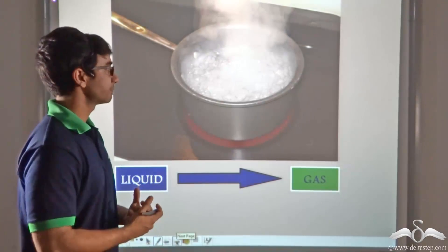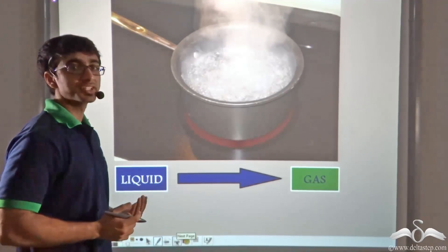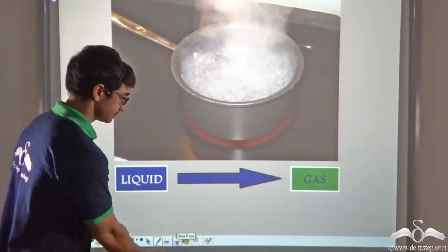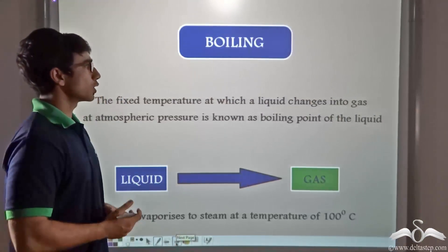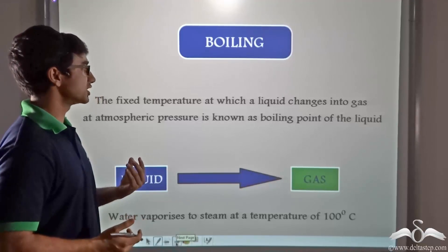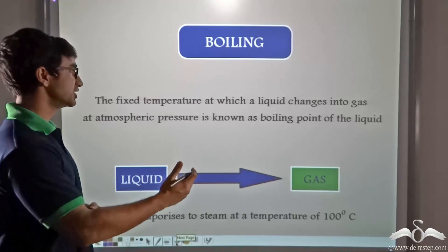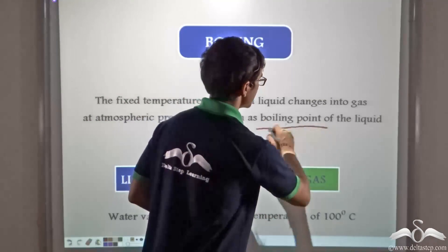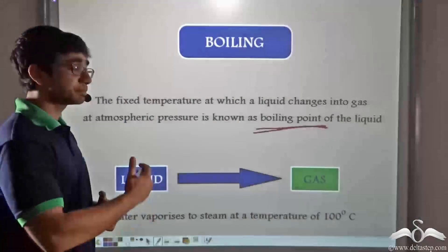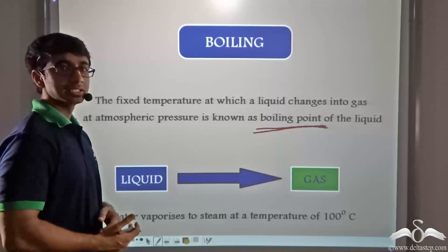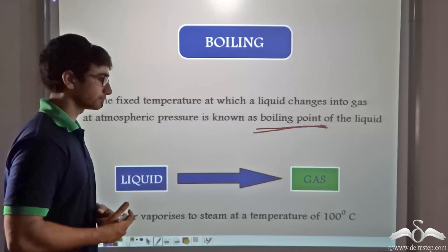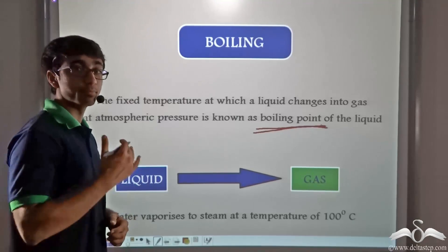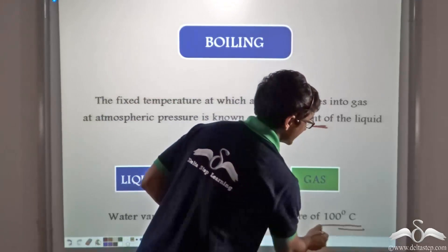So this process where a liquid is converted into gas is known as vaporization or boiling. The fixed temperature at which a liquid changes into gas at atmospheric pressure is known as the boiling point of the liquid. In the previous case, we considered that water after boiling was changing into steam. Water vaporizes to steam — or water starts boiling — at a temperature of 100 degrees Celsius.